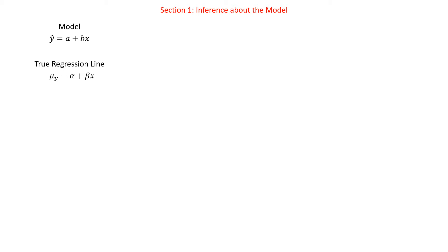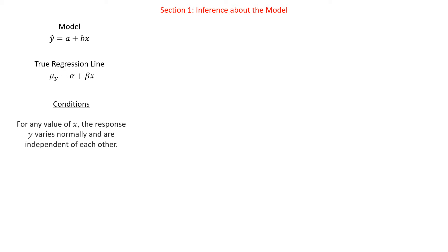So we are looking at the true regression line. Before we get into how to actually find these things, let's look at some conditions for being able to do inference about a model. Our conditions: for any value of x, the response y varies normally, and they're independent of each other. The independence is kind of like getting an SRS, making sure we're actually having individual values. The response y for each x is going to vary normally — we actually saw that on the title screen graphic.